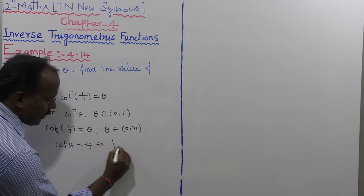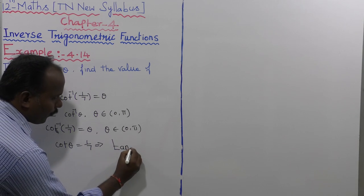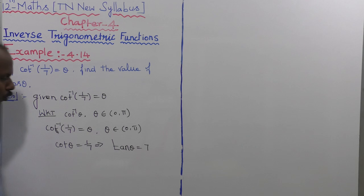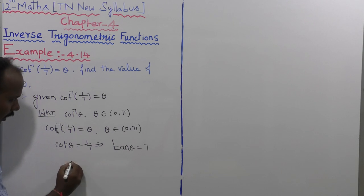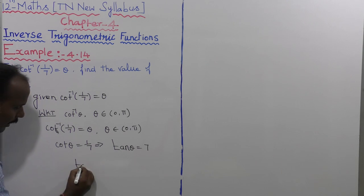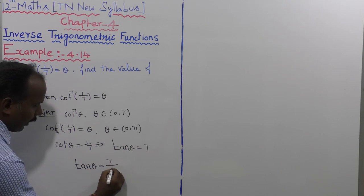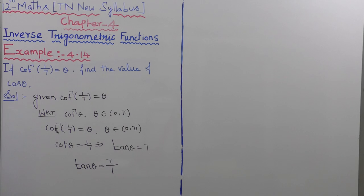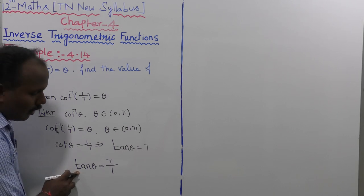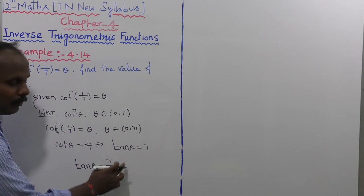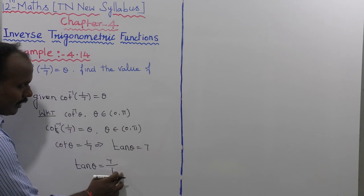Then tan theta is equal to 7. So tan theta is equal to 7 divided by 1. The formula for tan theta is opposite divided by adjacent sides.